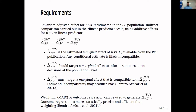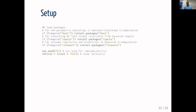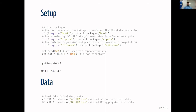Because this workshop is about the use of R, here is my setup for the code I'm presenting. I require three packages: one for performing the nonparametric bootstrap, another for simulating covariates from the copula, and another for fitting Bayesian regression and drawing outcomes from the posterior predictive distribution. My R version is 4.1. I load the simulated data: AC IPD and BC aggregate-level data.